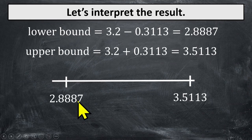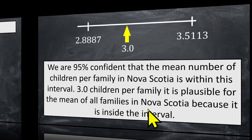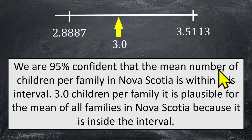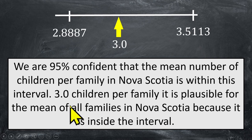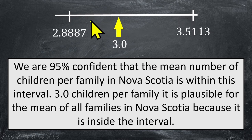Let's interpret. Here are our upper and lower bounds. We notice that the value we were asked about — 3.0 — is inside this interval. We are 95% confident that the mean number of children per family in Nova Scotia is within this interval, and 3.0 children per family is plausible because it's within the interval. We can say the true average could be 3.0 children per family, but any value within this interval would be a plausible value for the true mean.